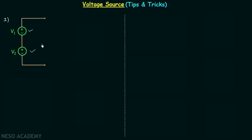When we move in the same direction we get the same polarity pattern. Moving from bottom to top we have minus-plus, minus-plus — the same pattern. Moving from top to bottom we get plus-minus, plus-minus — again the same pattern. Let's say the potential difference between the two terminals is equal to V volts. Applying KVL gives us: plus V2, plus V1, minus V equals zero.